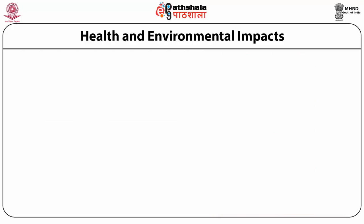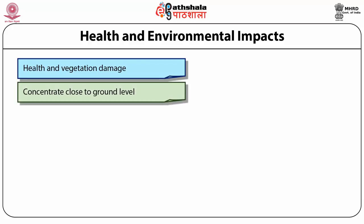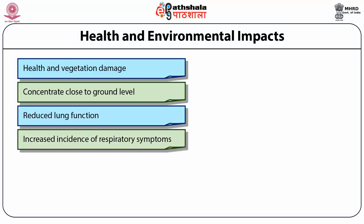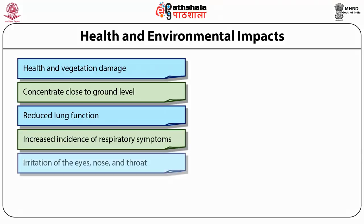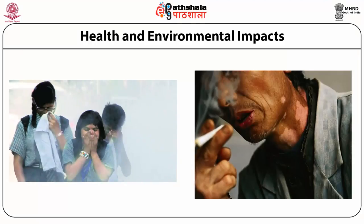Now we discuss the health and environmental impacts of sulfur oxides. Sulfur oxides affect human health and cause damage to vegetation. At concentrations close to ground level, sulfur oxide reduces lung function and increases incidences of respiratory symptoms. It also causes irritation of the eyes, nose, and throat, and causes premature mortality. As seen in this figure, impacts include nausea, coughing, and bronchitis.